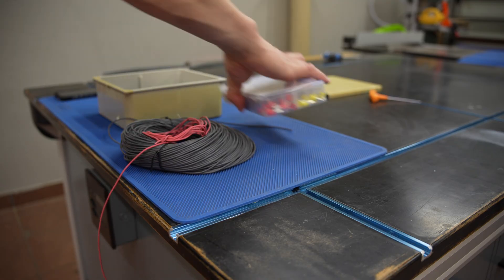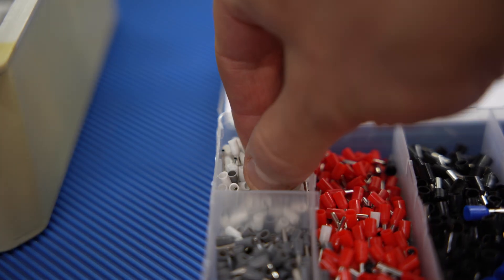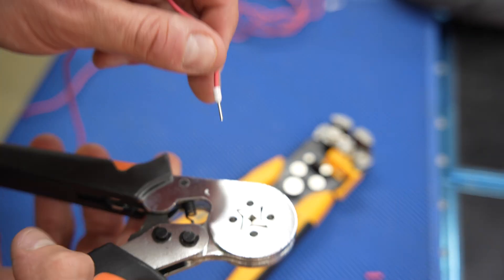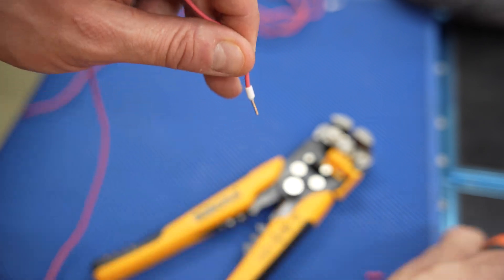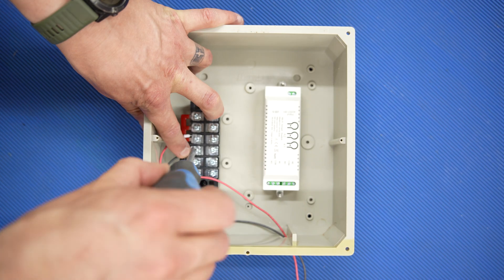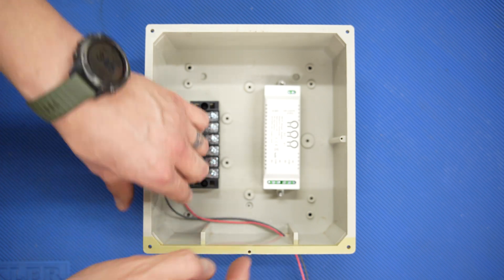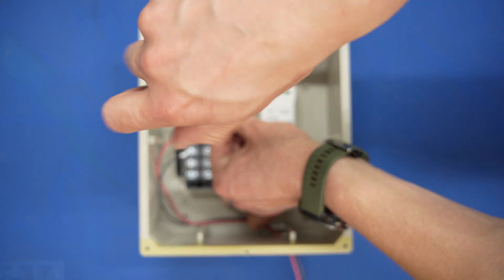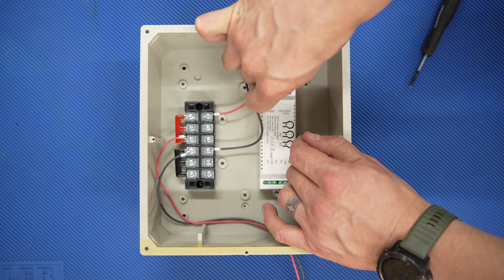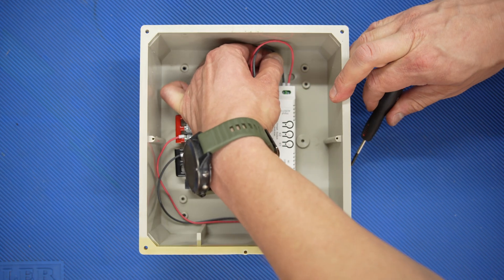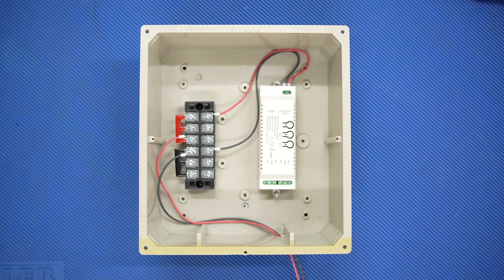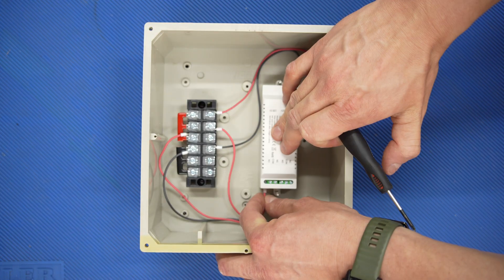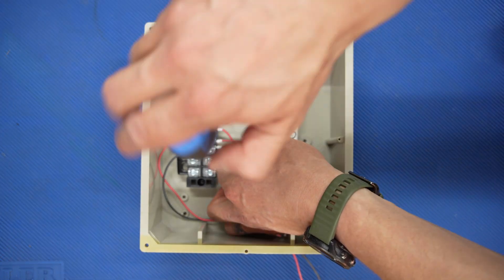I can use some 20 gauge silicone wire and boot lace ferrules to make all of the connections, first making two leads to supply the 24 volts from the power supply to the terminal block, then to power the controller I made two leads from the terminal block to the controller, and to power each solenoid valve I made a lead for each relay from the terminal block to the relay's normally open terminal.